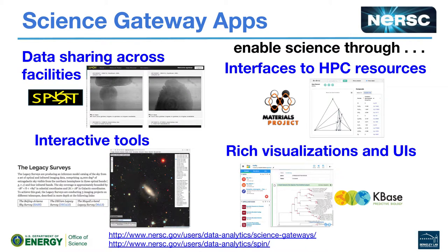Science gateways are hardware where we run user-written web applications that enable access to NERSC data by users outside of NERSC. These can be completely public or scoped to your own collaboration. You can use them in conjunction with Newt to provide an interface to HPC resources like launching jobs and things like that.